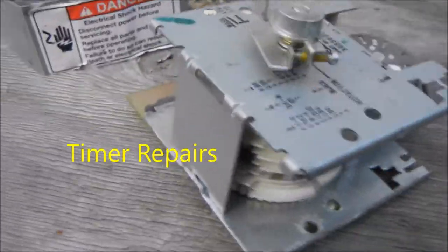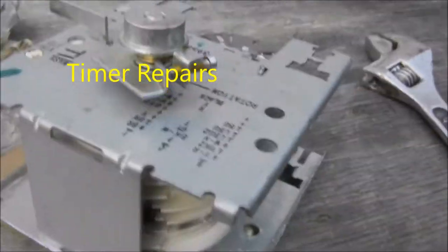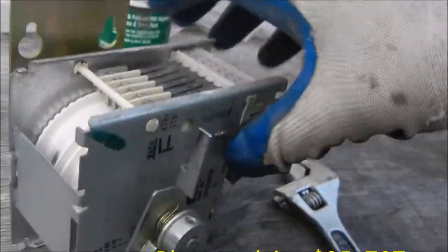Okay, so here's a commercial coin-out machine timer. It's a typical Kenmore Whirlpool timer and basically it would not come on.